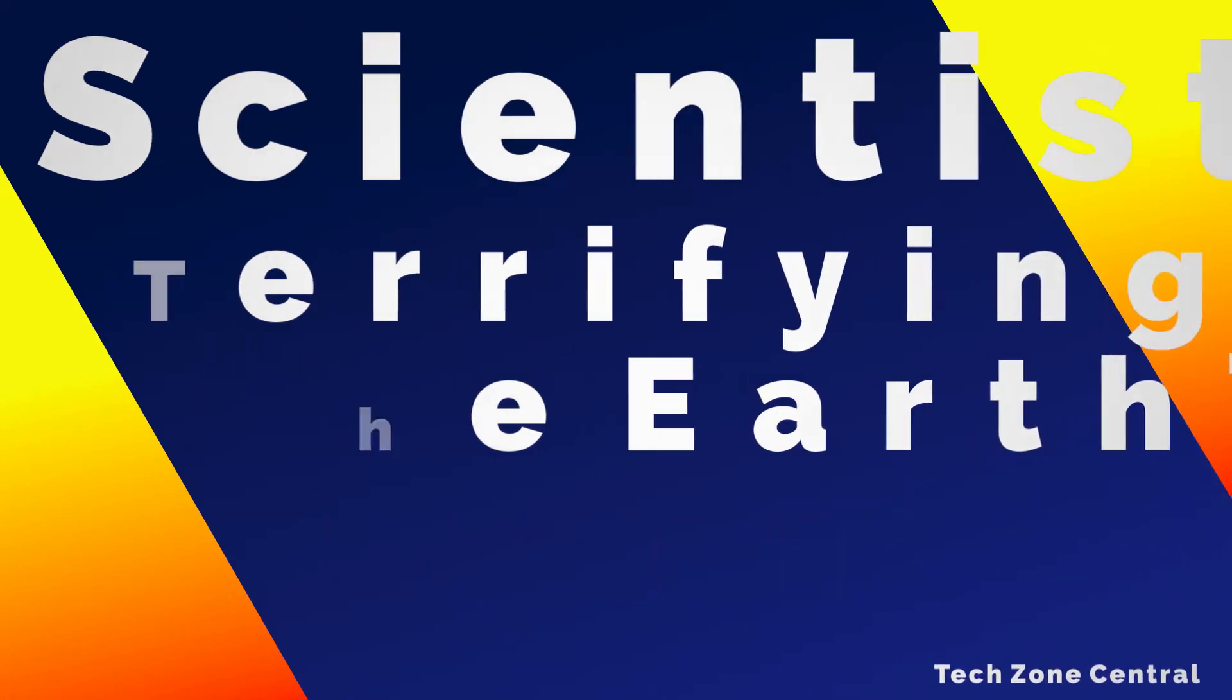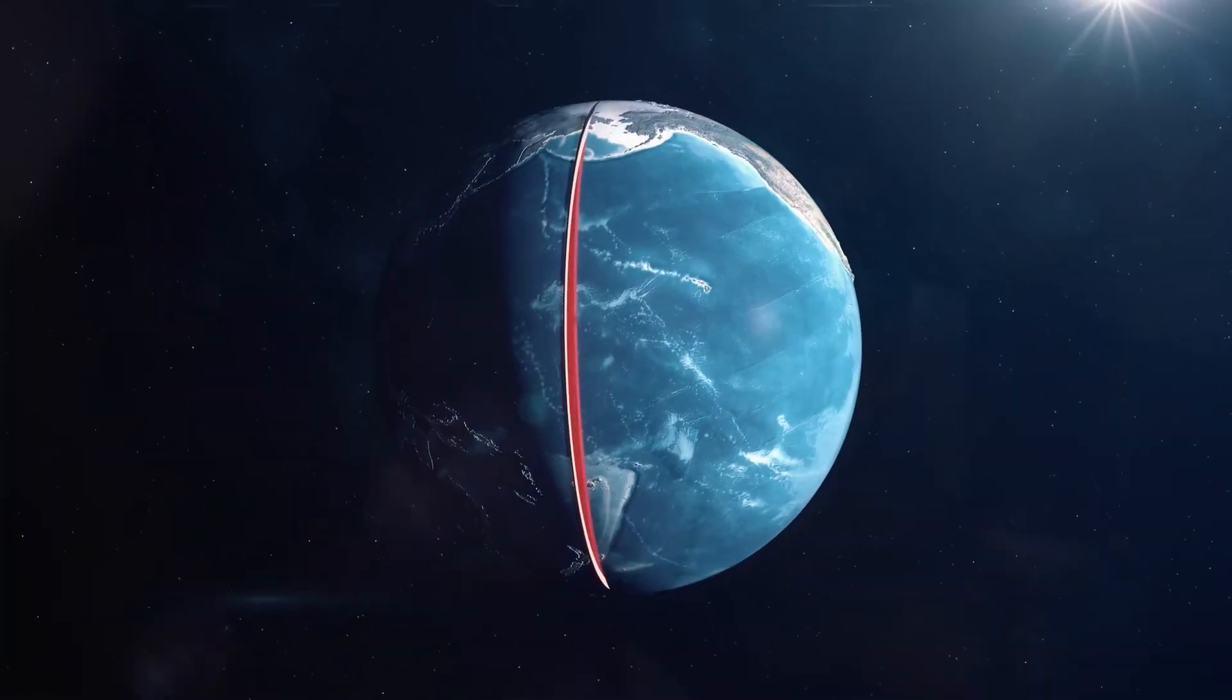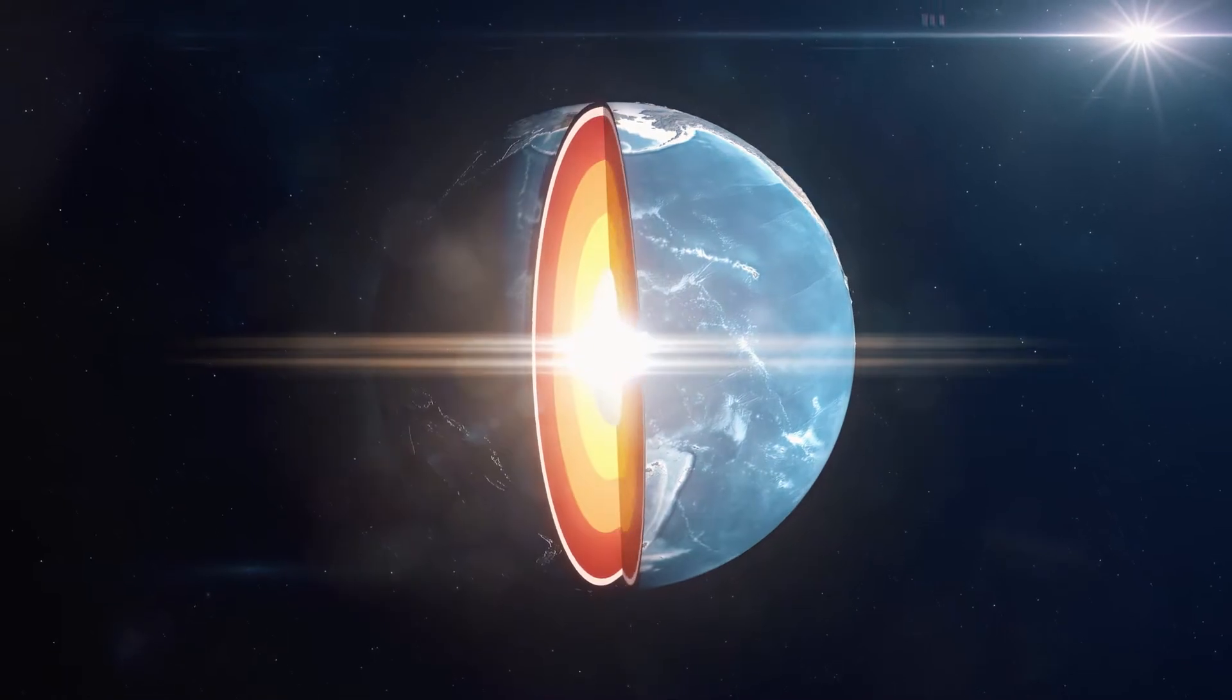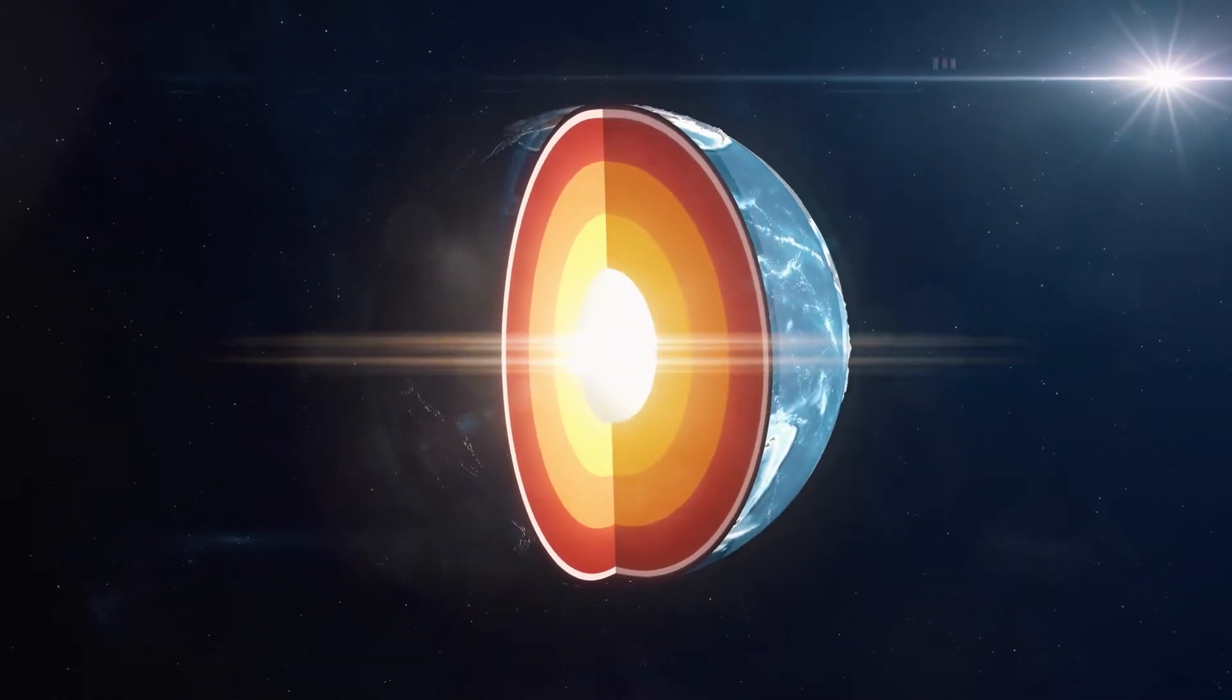The Earth's core stopped spinning. The deep core of our planet, which is a dense ball of iron and nickel, has been a mystery to scientists for a very long time.